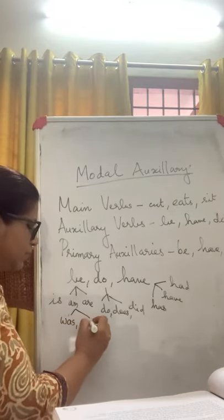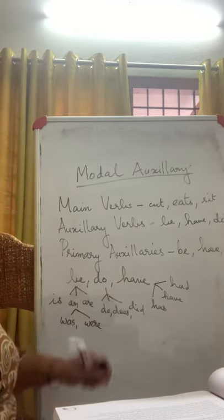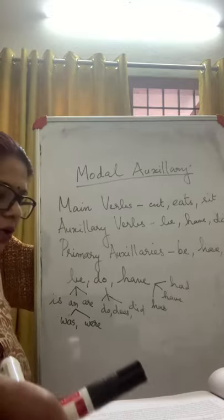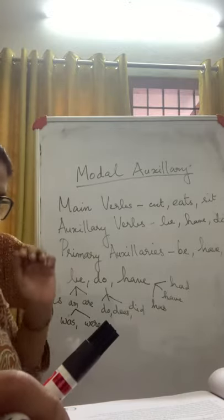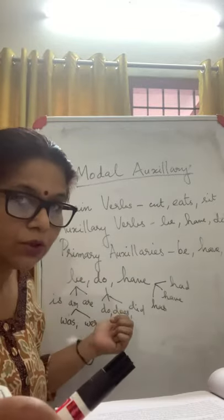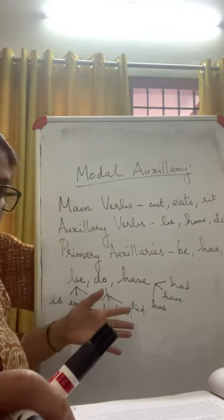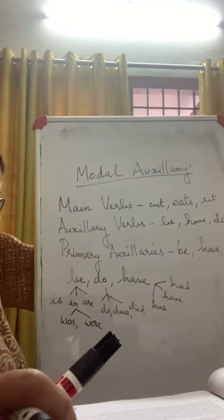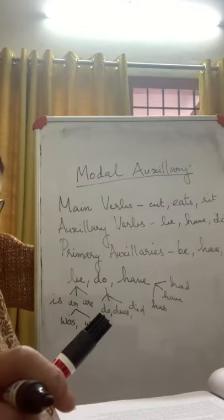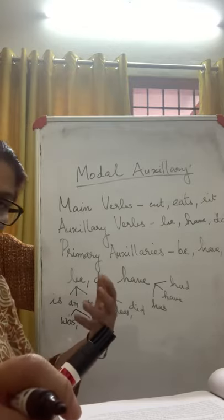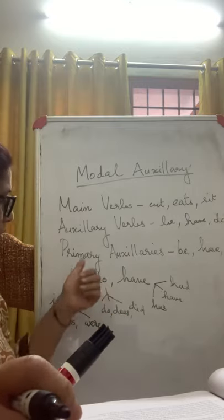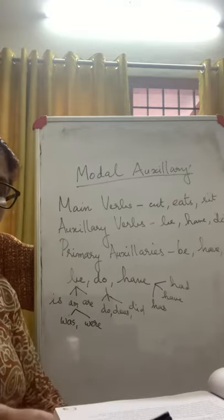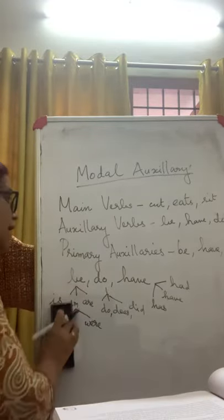Along with that, in the past form you have 'was' or 'were'. So these are all termed as the primary auxiliaries or auxiliary verbs. They are so called because they can also act as the main verb, and because they help to support the main verb. Now the next one we have to learn is called the modal verbs.